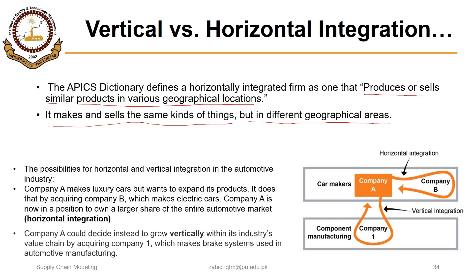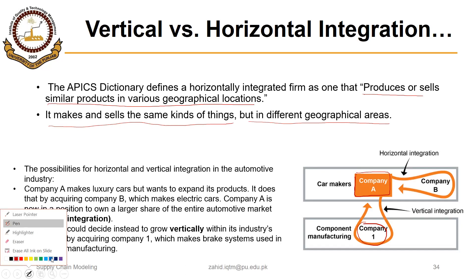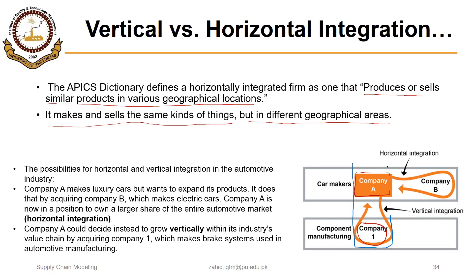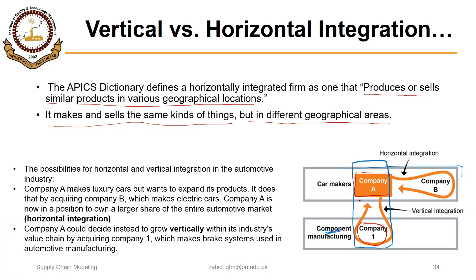Here is a simple example. There was a company A making luxury cars, and the brakes for those cars were made by company one. After some time, company A acquired company one — that is an example of vertical integration, since company A acquired a supplier making a component for its cars. Now there is a company B making electric cars. If company A acquires company B or starts to make electric cars itself, that is horizontal integration — it is expanding in the horizontal direction, making cars of a different type.